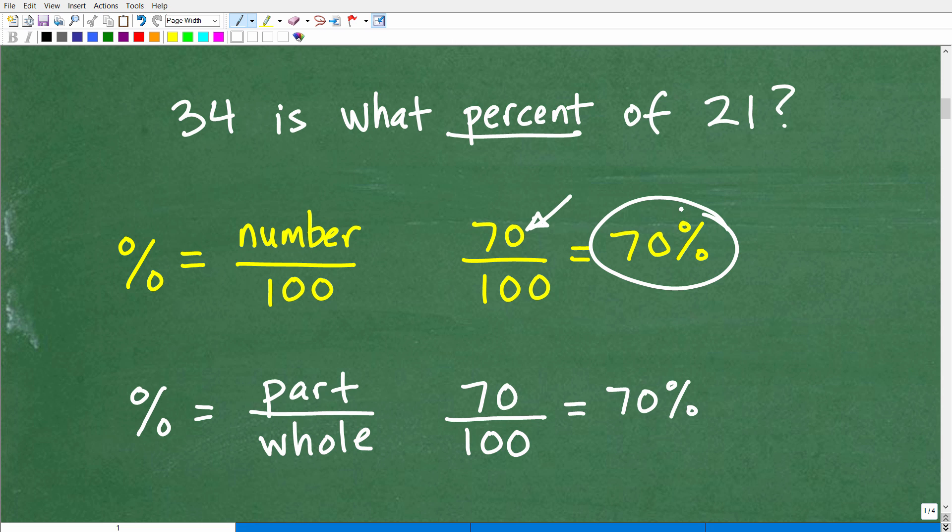But another good way to think of percent is some sort of part out of a whole. Okay, so if you got 70 out of 100 on a test, right, you got part of the points on a test that was worth 100.